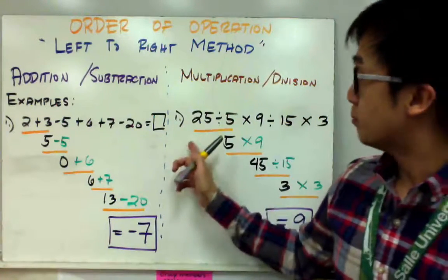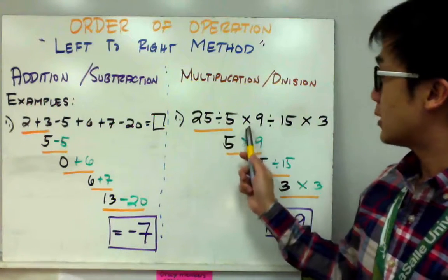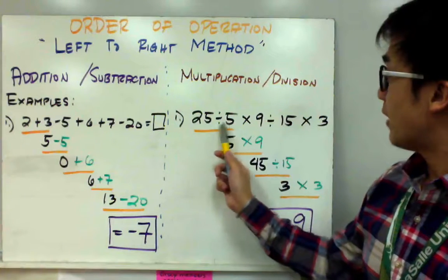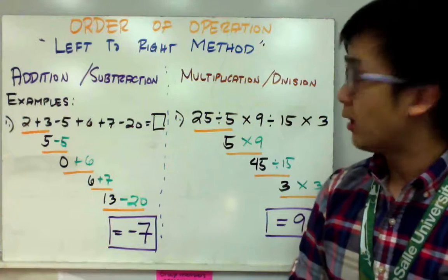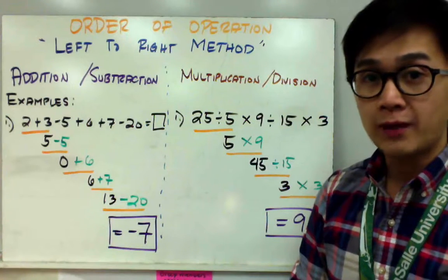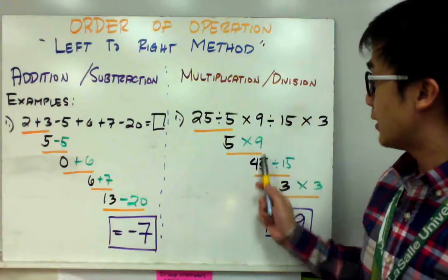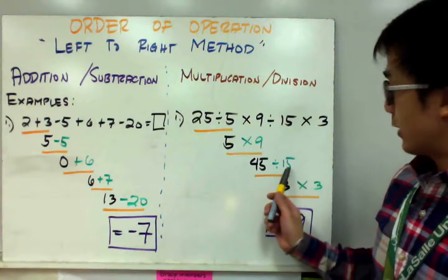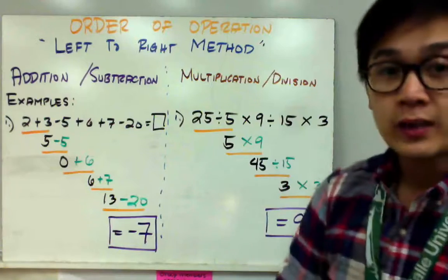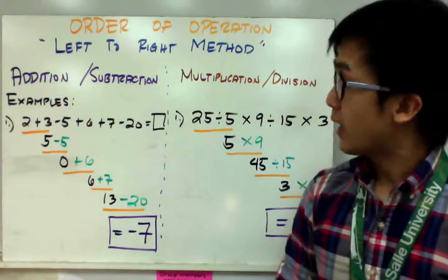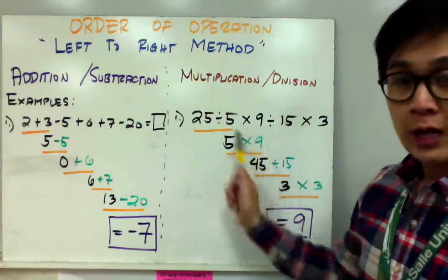For example number two with multiplication and division, I only have division and multiplication in my problem. So if I have 25÷5×9÷15×3, I don't need to think about PEMDAS — I just perform my operations from left to right. So 25÷5=5, then 5×9=45, then 45÷15=3, and 3×3=9. This method only works if your problem contains only addition and subtraction, or only multiplication and division.